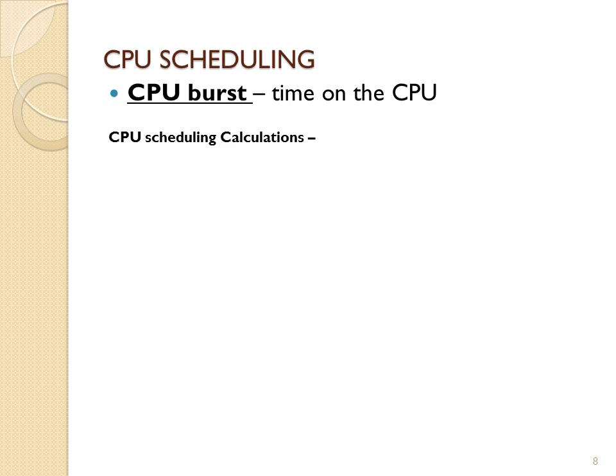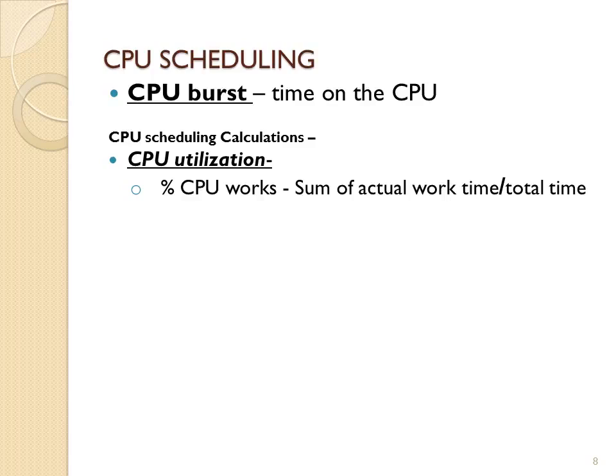There are some calculations we can make to compare different algorithms. The first is CPU utilization — the percent of time the CPU is active in a given amount of time. For example, if in 100 time units the CPU was active for 75 of those, that would be 75% CPU utilization.